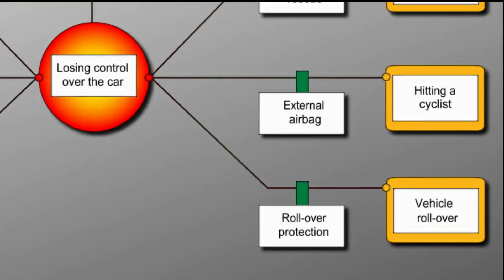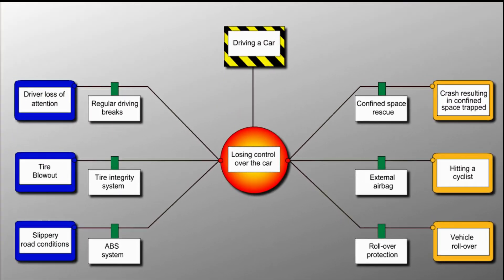Therefore, when we look at the bowtie, we see a comprehensive graphical representation of plausible incident scenarios centered around the one top event. One possible scenario is a driver distraction leading to a vehicle rollover, so incidents carve a path from the left side to the right side of the bowtie.